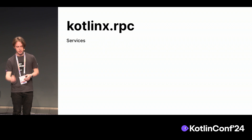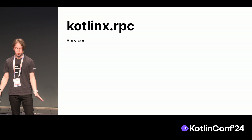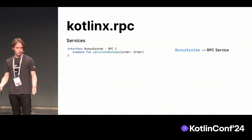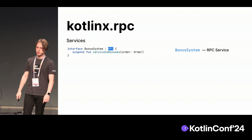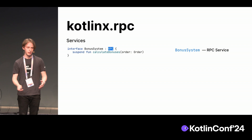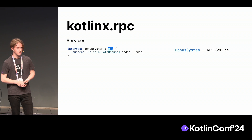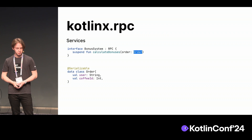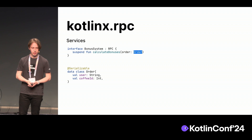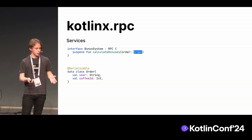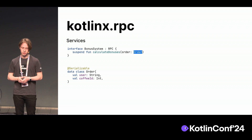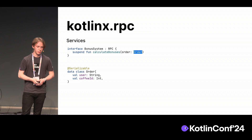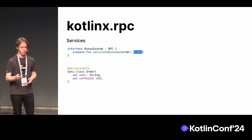Let's get back to our services. We already saw that we have our bonus system — it is an RPC service. With our library, all you need to do is mark it with an RPC interface, and our compiler plugins will generate the code needed for everything to work properly. You may also notice we use an arbitrary data class here to pass as an argument. The only thing required is to mark it as serializable with the annotation from Kotlinx Serialization, and the serialization process will be handled by the library smoothly.